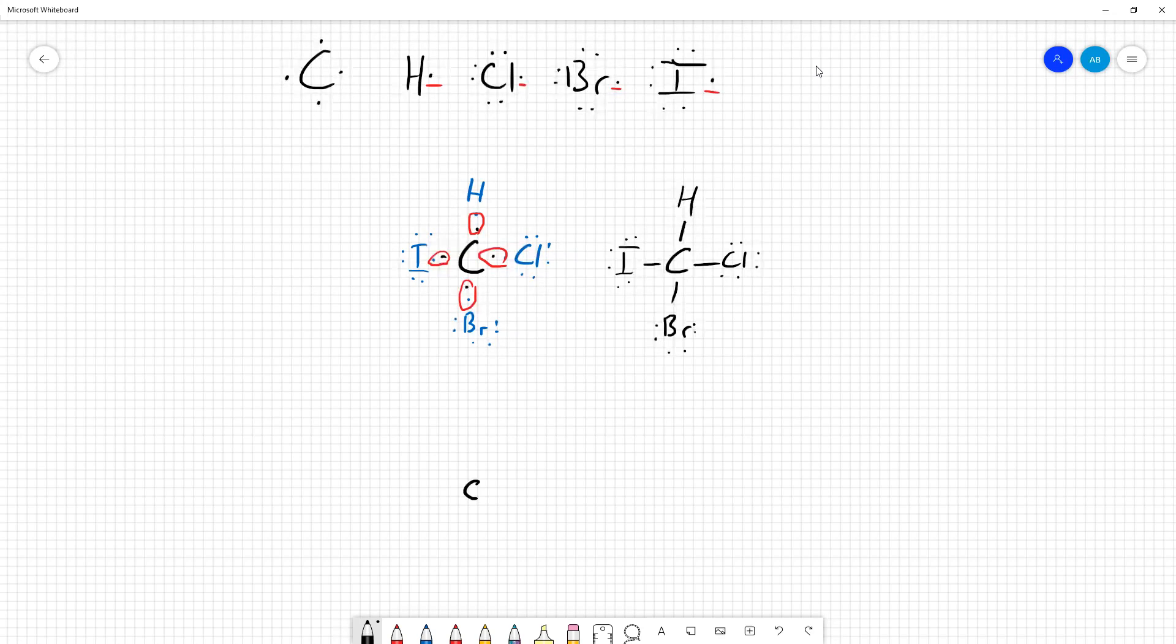And so if we want to do the 3D structures of these, we can have a dash line to indicate hydrogen is going away from you, then you want to show one thing coming towards you with a wedge, then two other things in line with the page here. So I'm going to do both an R enantiomer and an S enantiomer. S is like left or counterclockwise.